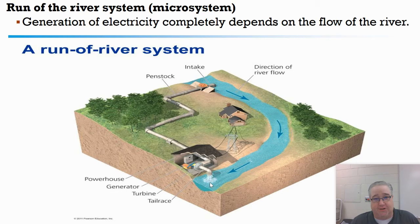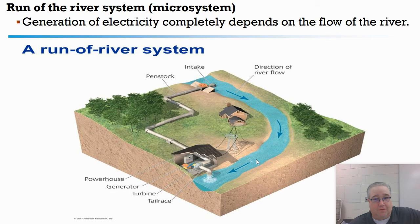You need flowing water for this to work, so think about the limitations. What happens if there's a drought and the river dries up, or it gets cold and the river freezes? You don't get any electricity. One of the big challenges is making sure the river flows so you have a constant influx of kinetic energy coming into the powerhouse.